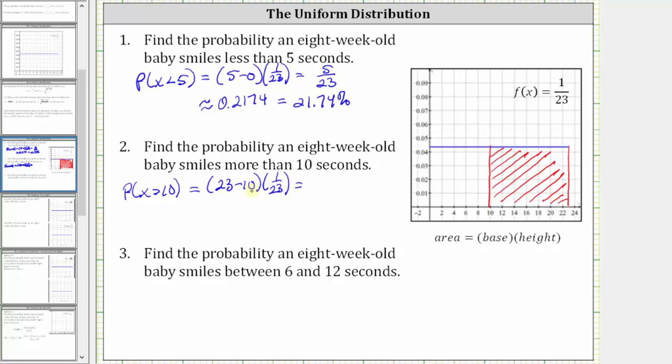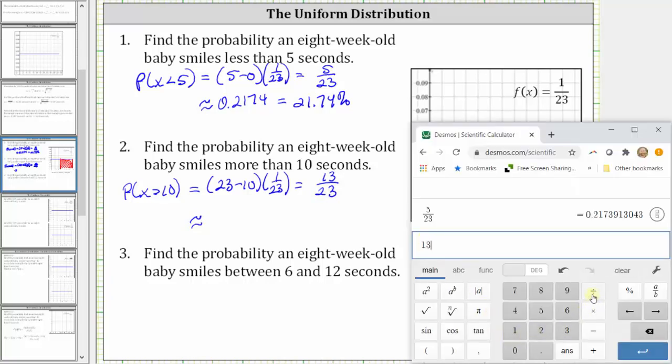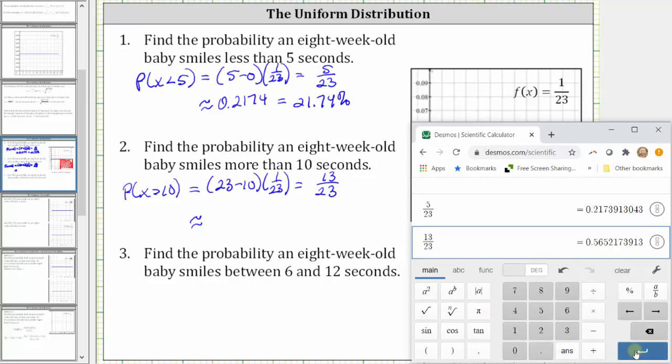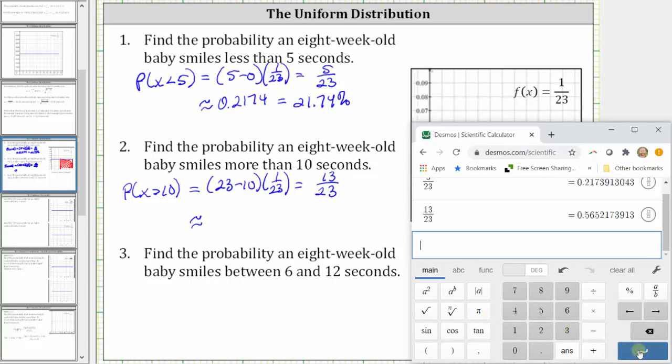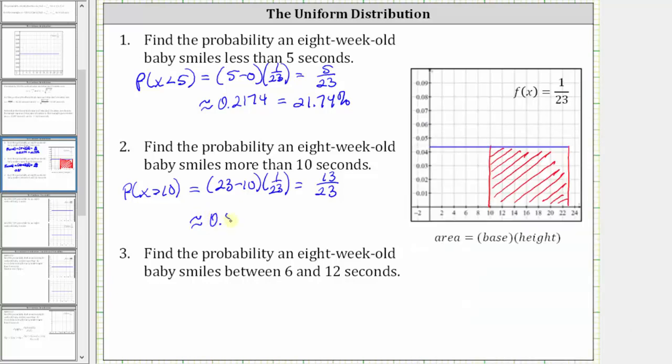Again, 23 minus 10 is 13. 13 times 1/23rd is 13/23rds as the exact probability. Again, let's also get the decimal approximation as well as the percent. 13 divided by 23 to four decimal places is approximately 0.5652, which is equal to 56.52 percent.